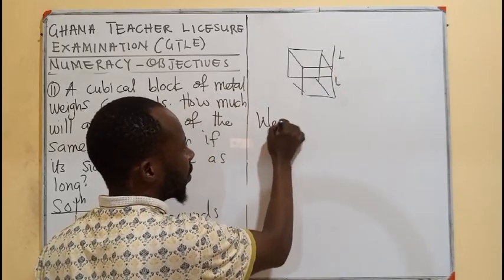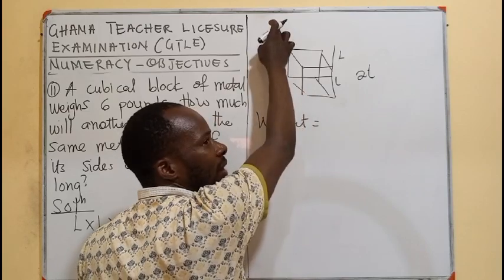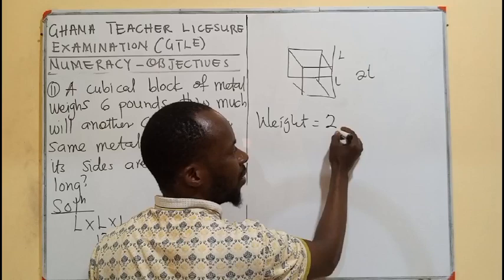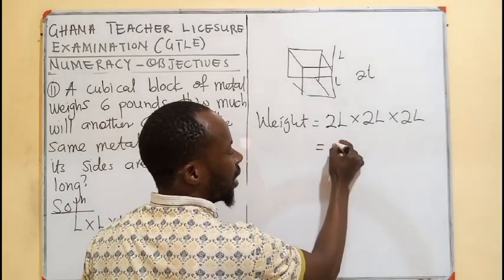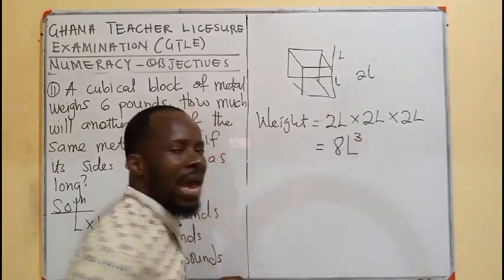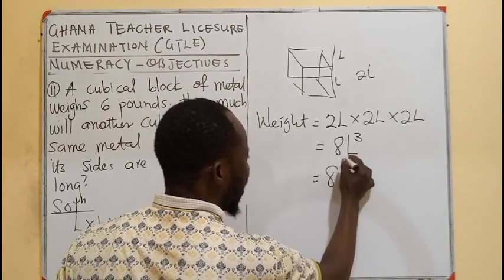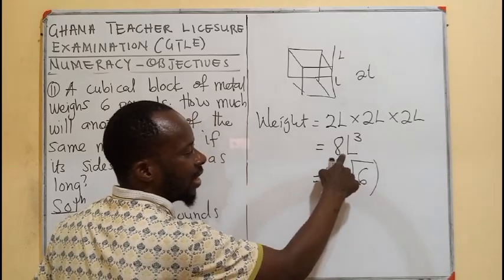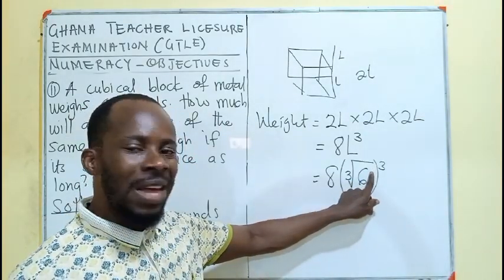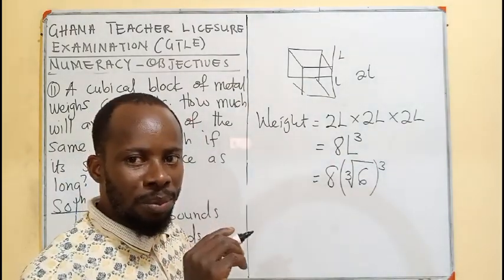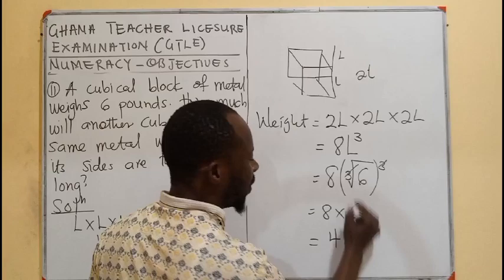So, it means the weight of this is going to be the length, which is now double, two L. One side, two L, two L. And there are three groups of that. That is going to be two L times two L times two L. In this case, two times two times two, that gives us eight. Then, L times L gives us L cubed. But, we are aware that the L is changed to a cube root of six. Therefore, eight times the cube root of six, which is the L, raised to the power of three. And, if we have a cube root, which is the same as a power of one-third times three, the cube root will cancel the cube. Then, that gives us eight times six. And, that gives us forty-eight pounds.